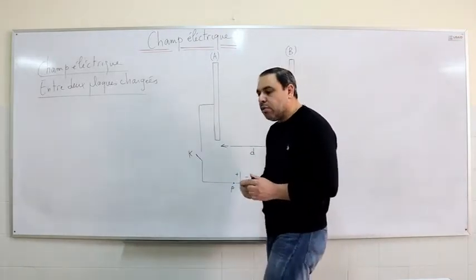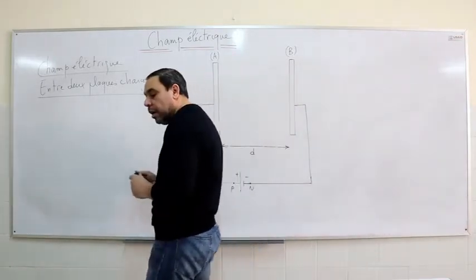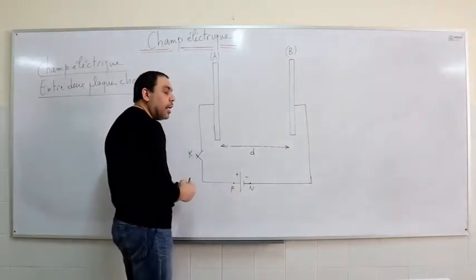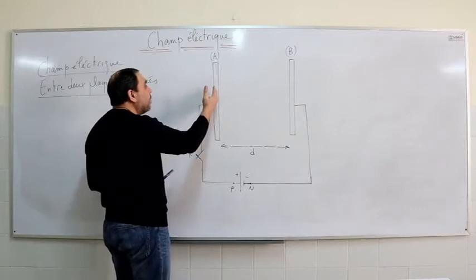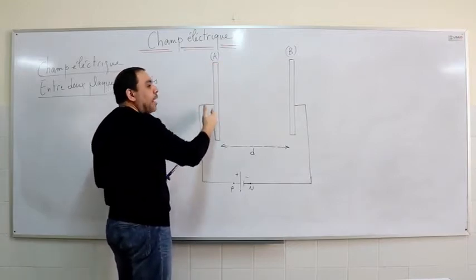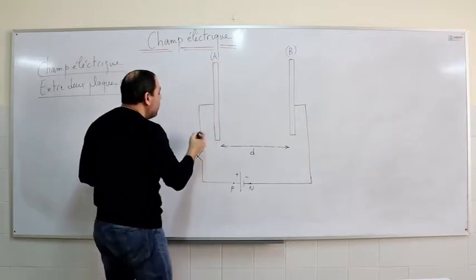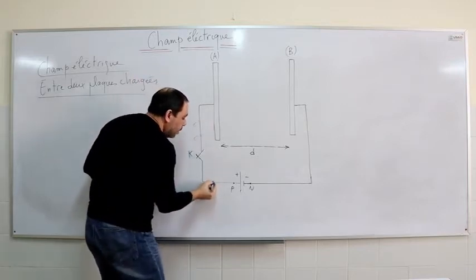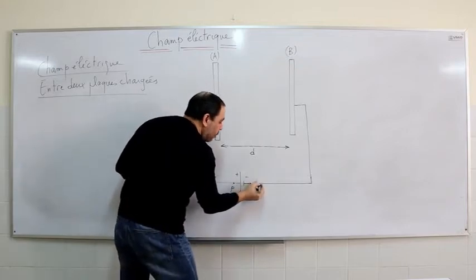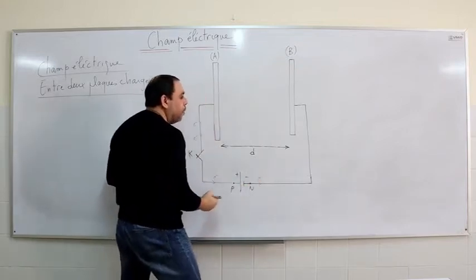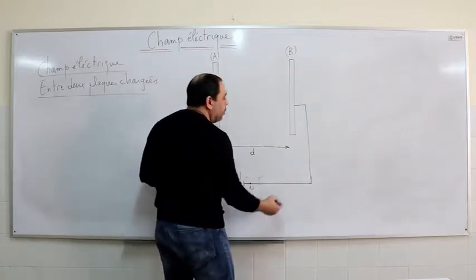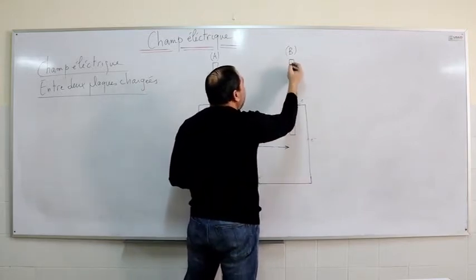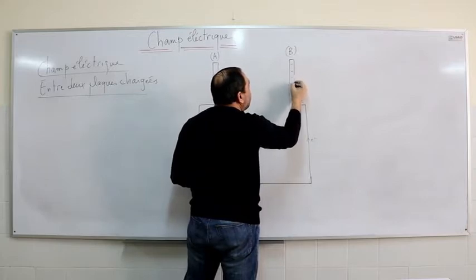When we close the switch, the positive pole of the generator will attract the free electrons of the conducting plate A. The electrons will circulate in this direction, repelled by the negative pole of the generator, and will move towards plate B, where they accumulate.